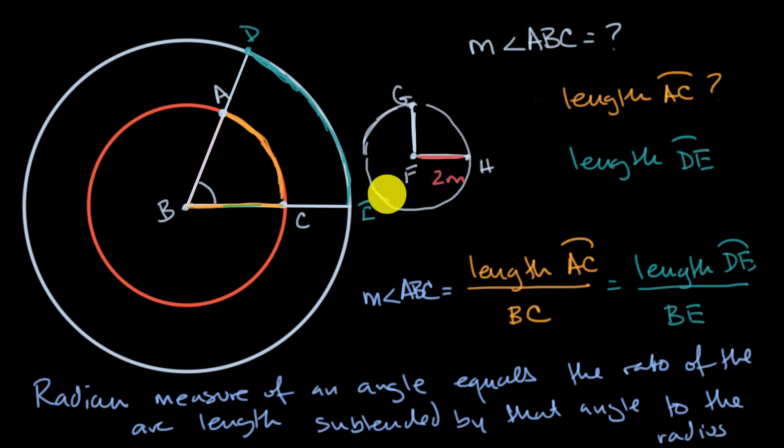So the entire circumference, I could write it here, the circumference is going to be equal to two pi times the radius, which is going to be two pi times two meters. It's going to be four pi meters. And so if this arc length is one fourth of that, this is going to be pi meters.